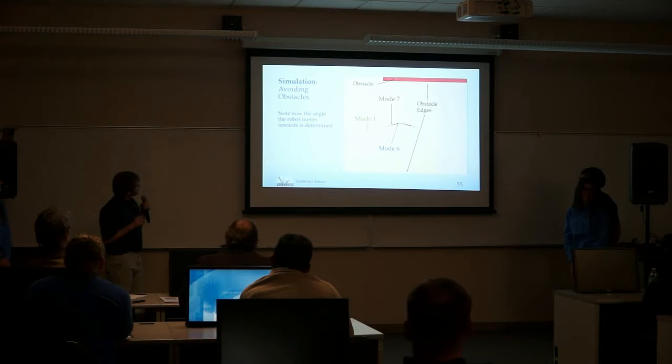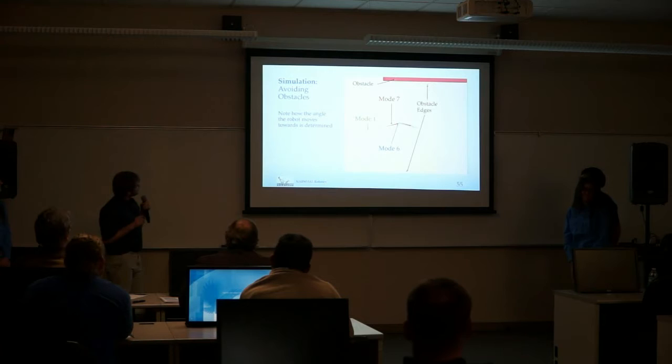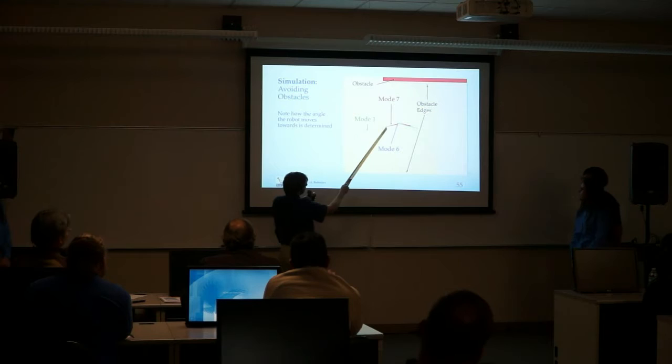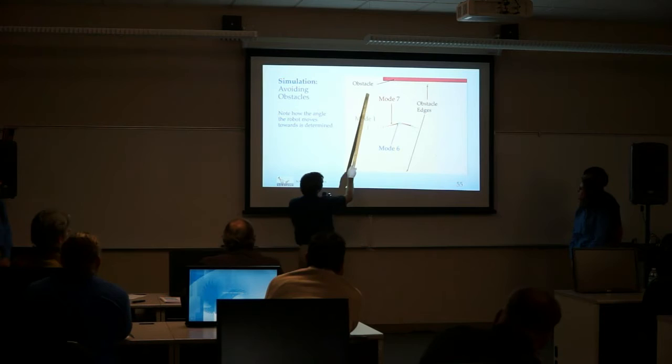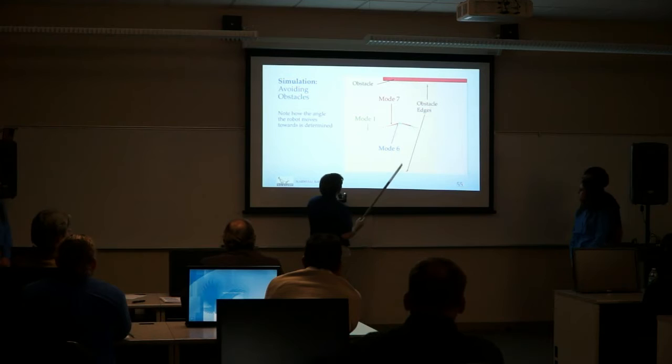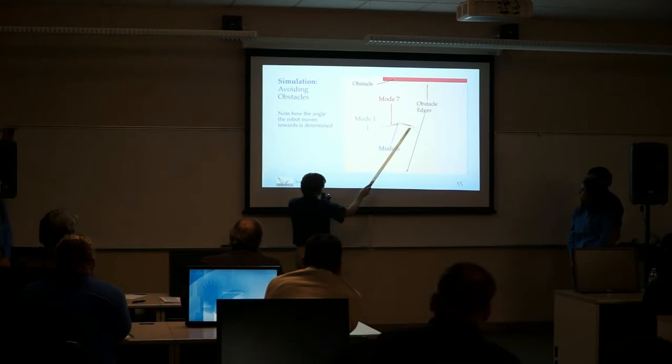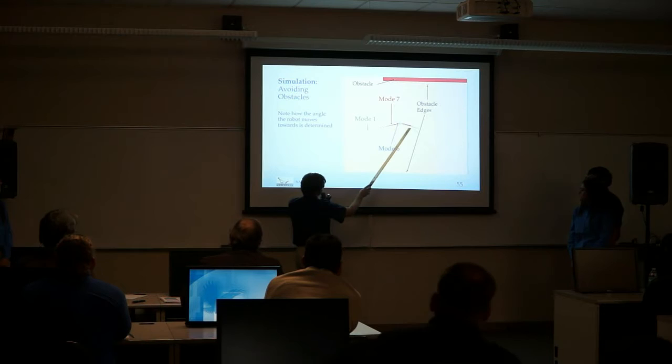This plot shows a close-up of the robot avoiding an obstacle. We're in Mode 1 moving forward, then as soon as we see the obstacle we switch to Mode 7 to slow down. When we've nearly stopped we switch to Mode 6, do a scan — all the little points are measurements — detect the obstacle edges, and decide to go between those two edges. Then we briefly turn the motors on, stop again, repeat the scan, and if it's clear we switch back to Mode 1 and continue forward.